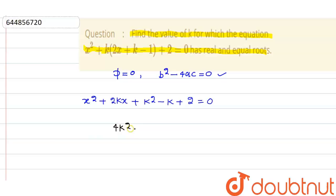(2k)² - 4ac. That means 4k² - 4(1)(k² - k + 2) = 0, where a = 1 and c = k² - k + 2.